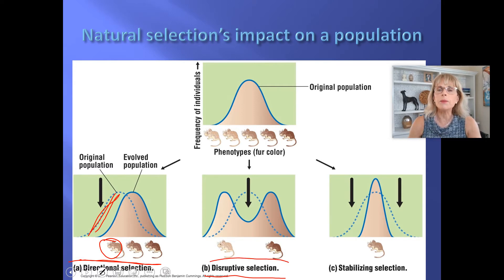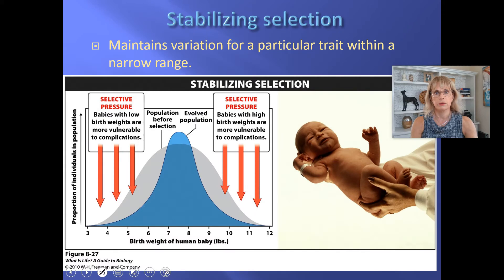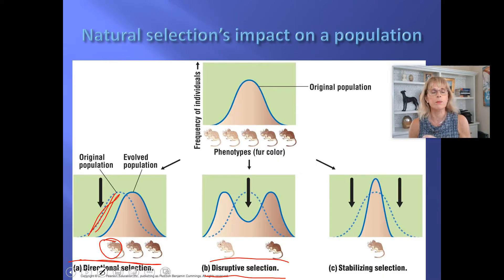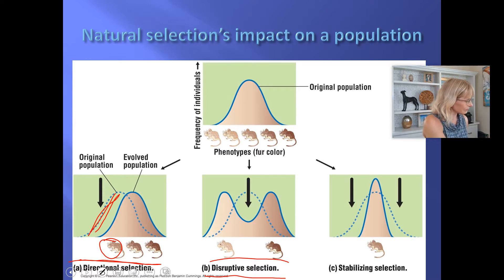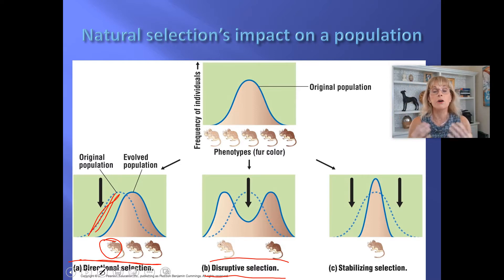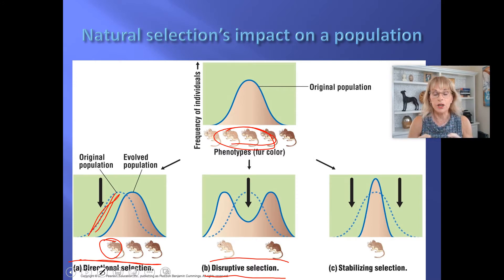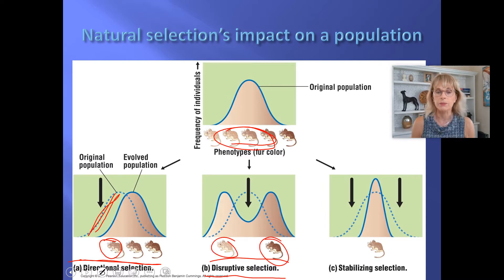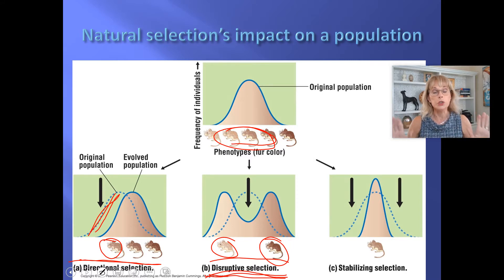Disruptive selection is epitomized by one of the activities in your lab this week called 'The Making of the Fittest.' It looks at how a single population of pocket mice that had some variation in color — over time, at one area, there are now two populations of pocket mice: one that lives on the dark rock and one that lives on the light rock. Disruptive selection is the kind most likely to lead to two different populations or an entirely new species.